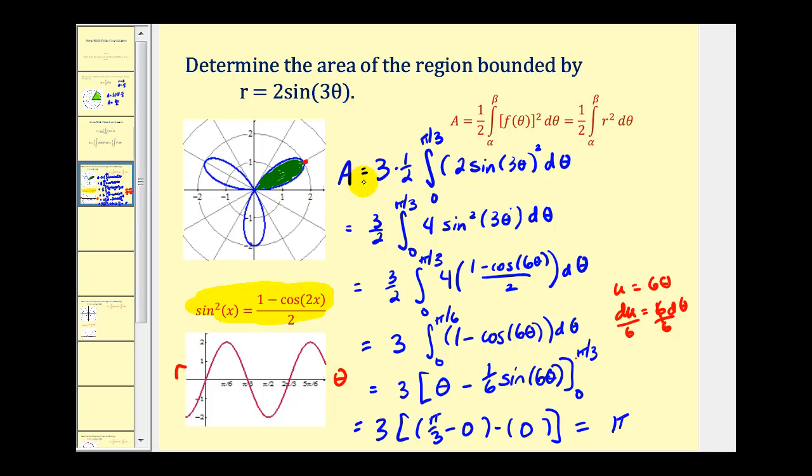Remember, we did multiply this initial integral by three, so this is the total area of all three petals, not just one. That'll do it for part one of area using polar equations. We'll take a look at some additional examples in the next part.